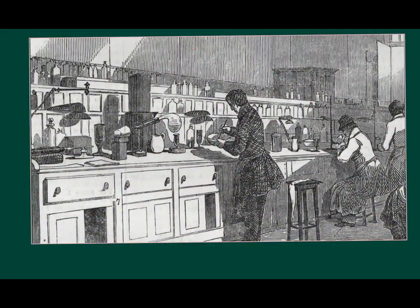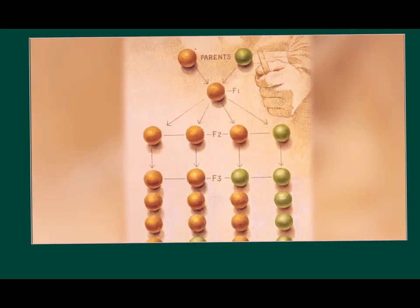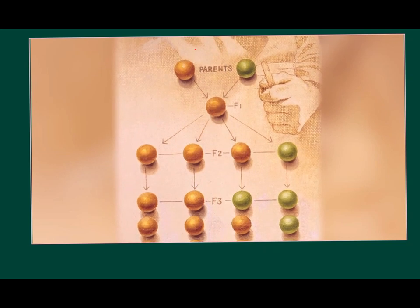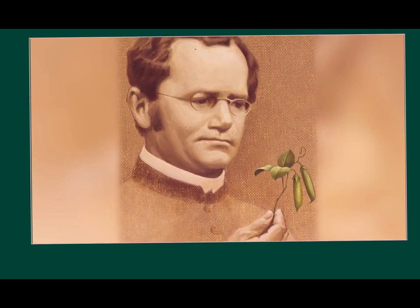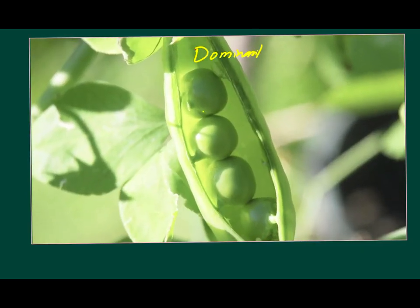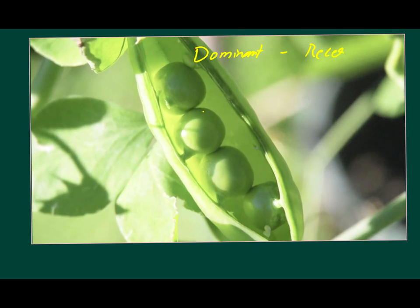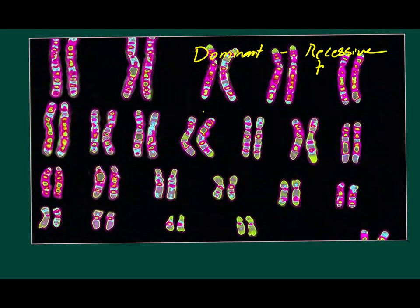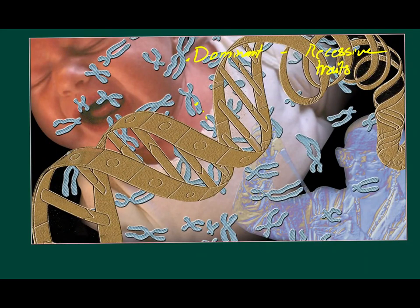Before Mendel, people thought you would equally inherit the traits of parent A and parent B in equal proportions. Mendel experimented with pea plants and found that instead there were dominant and recessive traits in all organisms that were passed on statistically based upon the mixing of genes between the two parents. This theory is now known as the law of segregation.